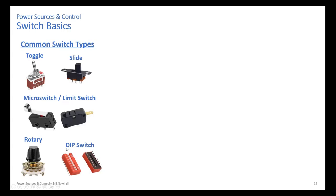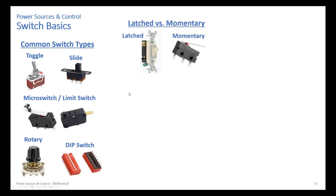A rotary switch has many positions and is seen on front panels of equipment. A DIP switch (dual inline pin) is designed to be plugged into circuit boards and used for configuring devices in hardware — typically eight switches in one package. Latched versus momentary: a wall light switch is latched — it stays in position. A momentary switch, like a push button or limit switch, returns to its original position when released.